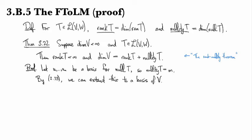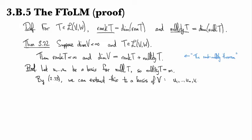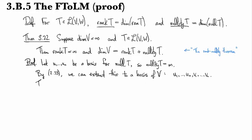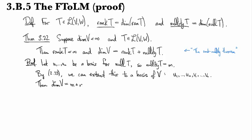All right, and so let's actually write it as u1 up to um and then we'll have the v's, so have v1 up through vn. So then the dimension of V is m plus n.